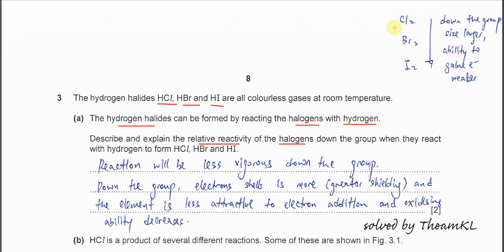First you need to know when down the group the size of the halogen is getting larger because the electron shell is getting more. Down the group, size larger means the ability to gain electrons is weaker, so it's harder for them to get electrons. Chlorine reacts faster with others because chlorine can gain electrons easier than the others.